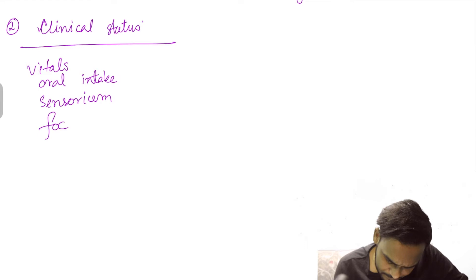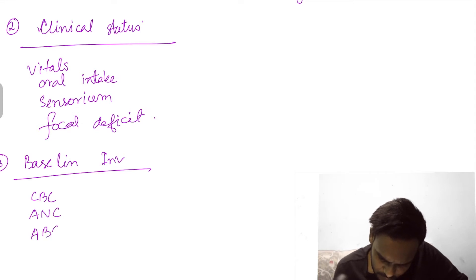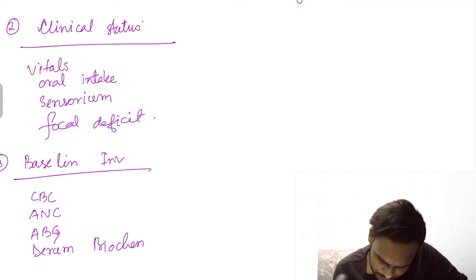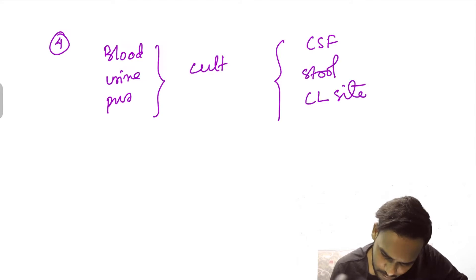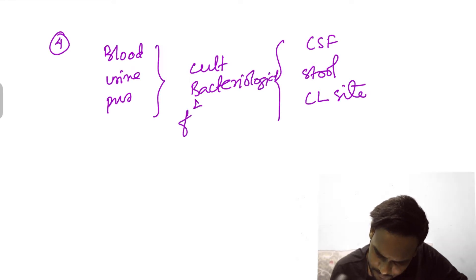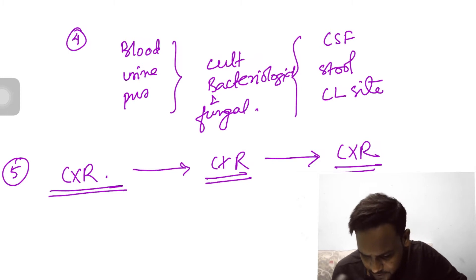Assess the patient's vitals and oral intake, then do some baseline investigations including CBC with absolute neutrophil count. Serum biochemistry is also needed. The fourth point, which is very important in a patient with febrile neutropenia, is bacteriological and fungal culture sensitivity. You may have to send blood, urine, pus, CSF, stool, or samples from the central line site for culture.